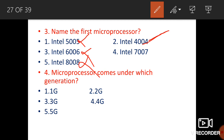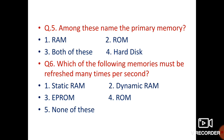Microprocessors come under which generation of computers? We have made a separate video on different computer generations covering all the basics — you can watch that. Microprocessors were not used in the first, second, or third generation, but they were used in the fourth generation. So fourth generation computers are where microprocessors started.